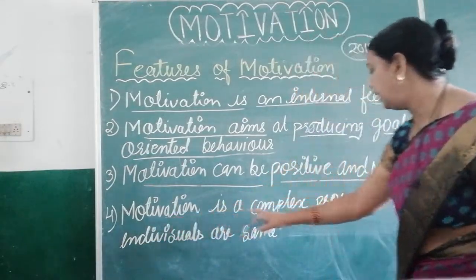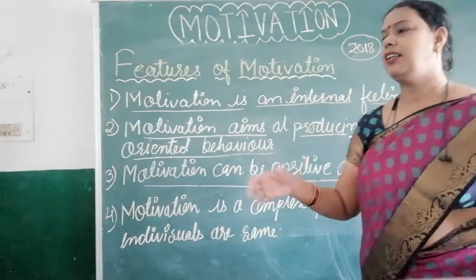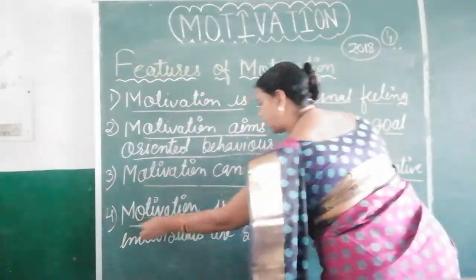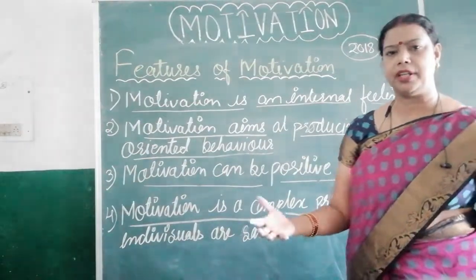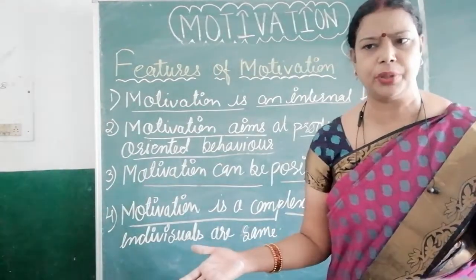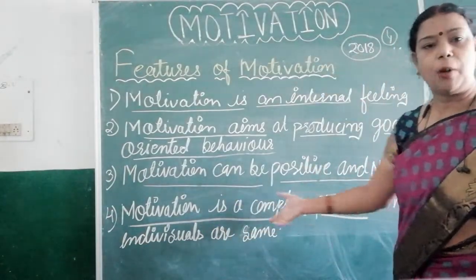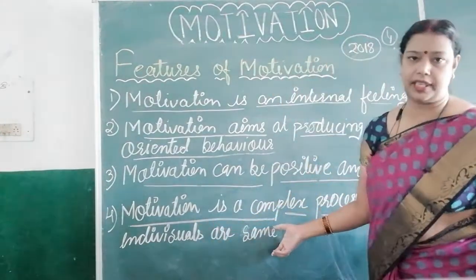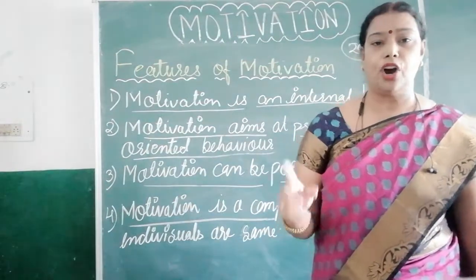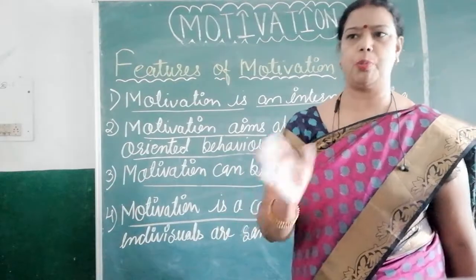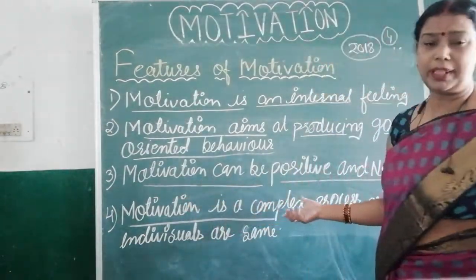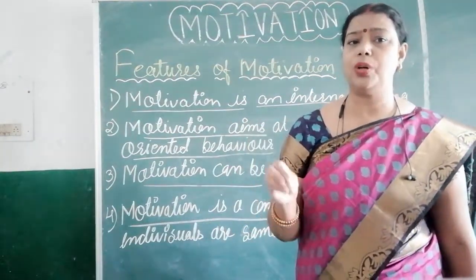The last feature is: motivation is a complex process. Complex process means it is different for different persons. For example, in a class of 26 students, not all students plan for 90% — some plan for 70%. So one type of motivation does not work for everyone. It is complex because no two individuals are the same.